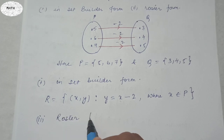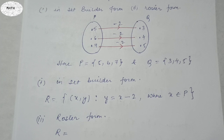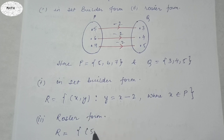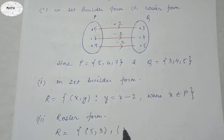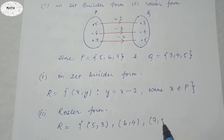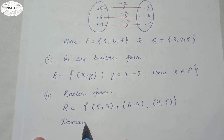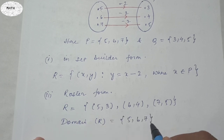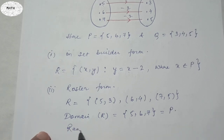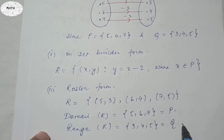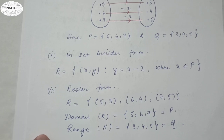In roster form, R = {(5, 3), (6, 4), (7, 5)}. The domain of R is the set of first elements: {5, 6, 7}, which is the set P. The range of R is the set of second elements: {3, 4, 5}, which is the set Q.